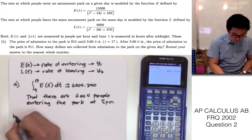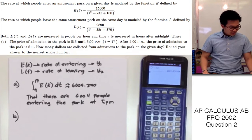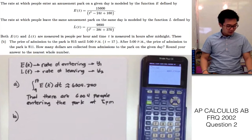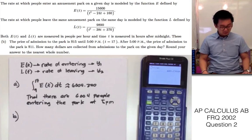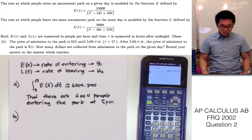For question letter B, we are told that the price of admission to the park is $15 until 5 p.m., and after 5 p.m. the price is $11. We need to find how many dollars are collected from admissions to the park on the given day, rounding to the nearest whole number.